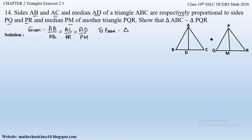To prove these two triangles similar, there are four kinds of similarity criteria. Since two sides of both triangles are already proportional, we can either prove the third side proportional or prove one angle equal. We can prove angle A equals angle P, or prove BC equals QR to apply SAS or SSS similarity. However, proving the third side directly is not straightforward, so we will prove angle A equals angle P.